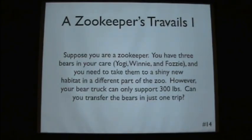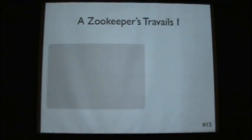Okay, so let's do some more examples just to make this a little more concrete. So here's a, suppose you're a zookeeper. We have three bears and we need to take them to their shiny new habitat. But our bear truck can only support 300 pounds. Doesn't seem like a very good bear truck. So can you transfer the bears in just one trip? So how would we do this in object-oriented programming? We have our class bear. It has an init method. And now our init takes self, as it always has to do, name, and weight.